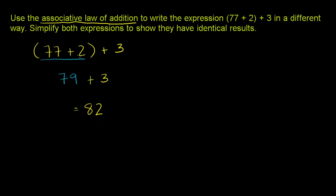That's if you just evaluated the way that they gave it to us. Now, the associative law of addition tells us it doesn't matter whether we add 77 and 2 first, or whether we add 2 and 3 first. We can associate them differently.